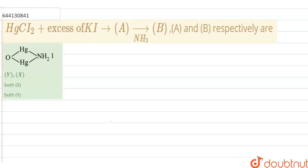Hello everyone, let's start the question. Mercury chloride with excess of potassium iodide gives A, and further A is treated with NH3 and KOH—sorry, NH4OH—it gives B. Find A and B respectively. So we have to find A and B according to the given information.